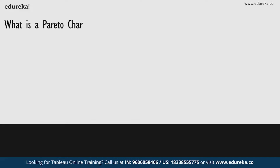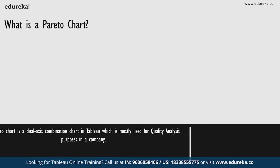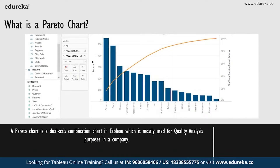A Pareto chart is basically a dual axis combination chart in Tableau. On its primary axis, bars are used to show basic raw quantities for each dimension, usually sorted in descending order. On a secondary axis, a line graph is used to show the cumulative total in a running percentage format. This chart type is most known for being a part of the seven basic tools of quality control.